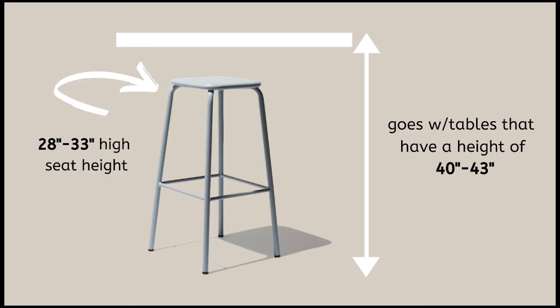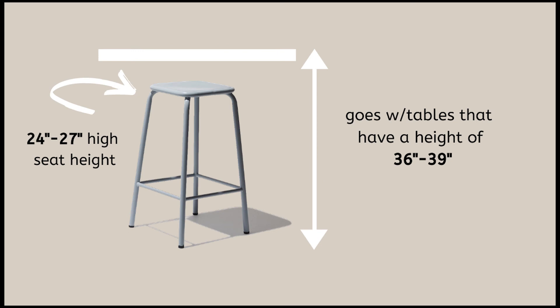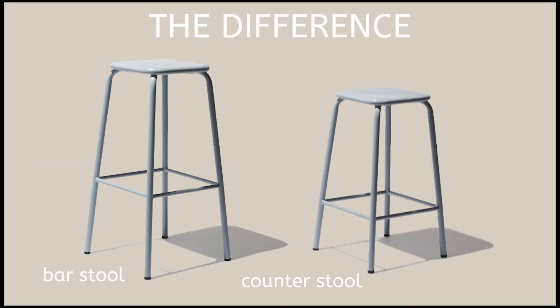Now these two items are sometimes misused, so I'll explain. A bar stool is a type of tall chair with a seat height of 28 to 33 inches, and it goes with tables that have a height of 40 to 43 inches. A counter stool is higher than a standard chair with a seat height of 24 to 27 inches, going with tables of 36 to 39 inches. The difference: a bar stool is higher and suited for bar-height tables — if you can stand and lean on it comfortably, it's bar height. Counter stools are mostly used at kitchen islands. Always double-check the height of your table to get the appropriate seat height.